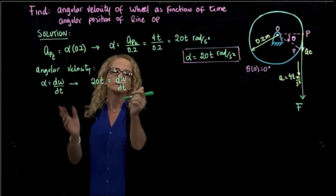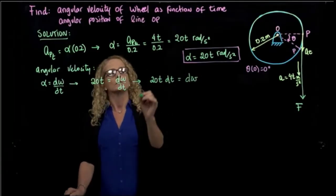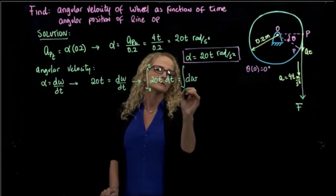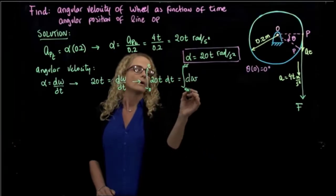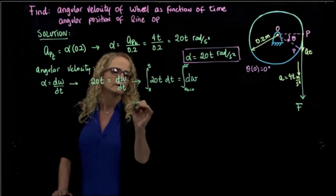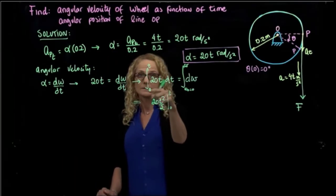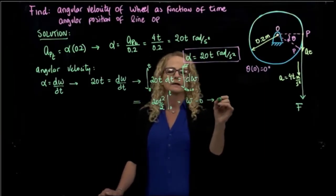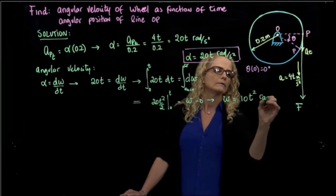We separate variables and write 20T dt = dω, then integrate both sides. The time integral goes from 0 to t, and the angular velocity integral goes from 0 to ω, since the disc starts from rest. Integrating gives 20T squared over 2, evaluated between 0 and t, which equals ω minus 0. Therefore, the angular velocity is ω = 10T² radians per second.